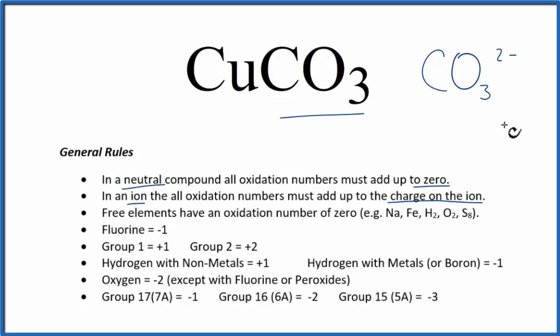Because of that, if this is going to have a minus 2 overall oxidation number, this is going to have to be plus 2 in order for the whole thing, a neutral compound, to be zero.